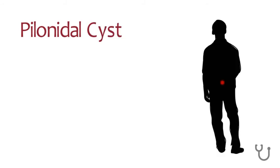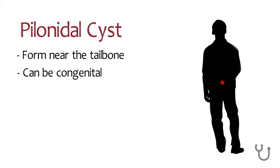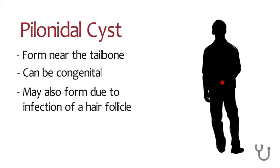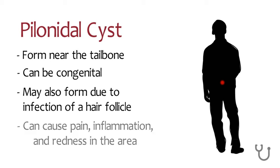Pilonidal cysts are cysts found in the tailbone area. They can be congenital or formed due to the infection of a hair follicle. This cyst can cause pain, inflammation, and redness in the area.